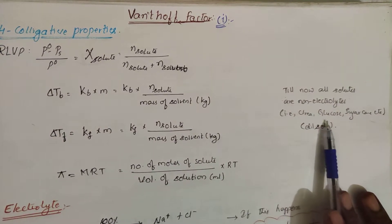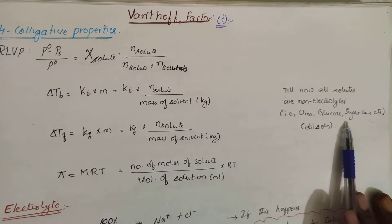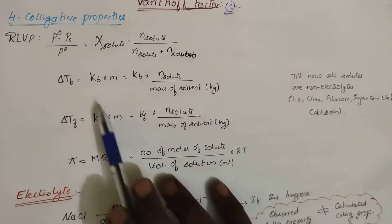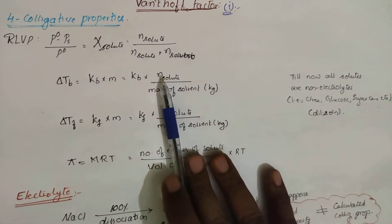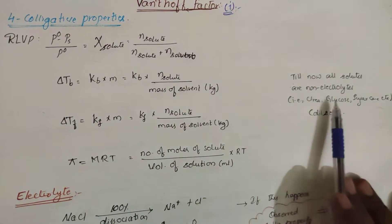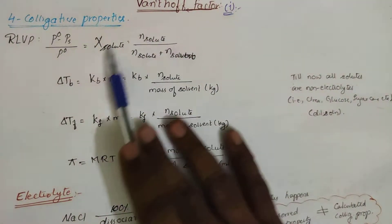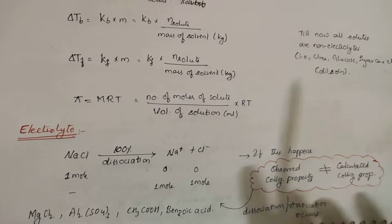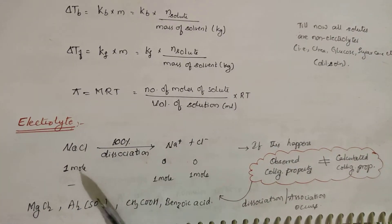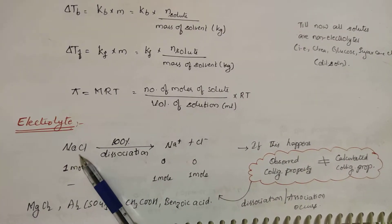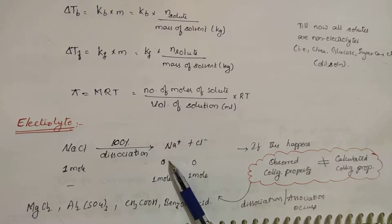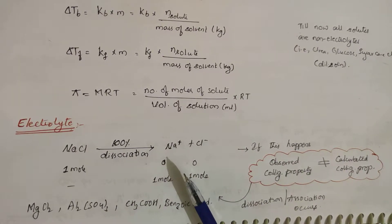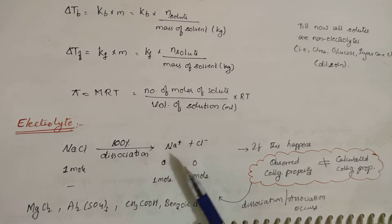Examples like urea, glucose, and sugar do not dissociate or associate in solution. For these non-electrolytes, you can directly calculate colligative properties using the standard formula. But suppose you have an electrolyte — let's take NaCl.